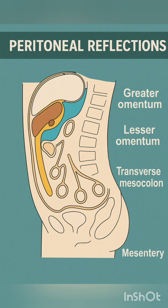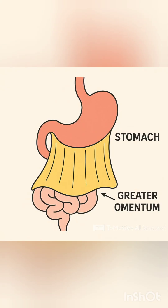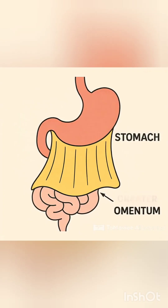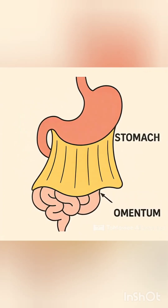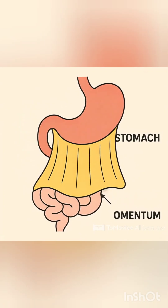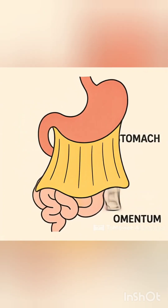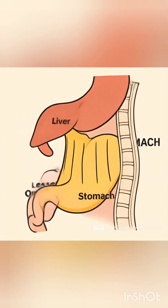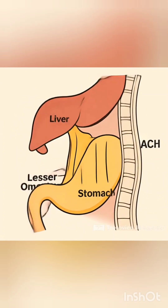The greater omentum is a fold of fatty tissue in the abdomen that hangs like an apron from the stomach and duodenum, as you can see here with this yellow color structure. It is also known as the policeman of the abdomen because it moves to areas of infection and promotes healing.